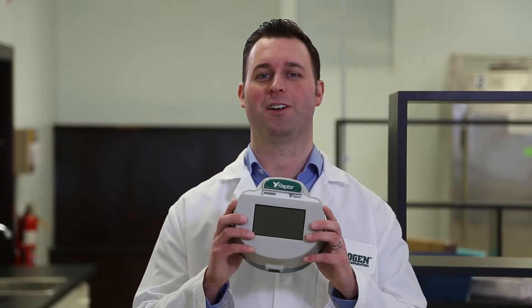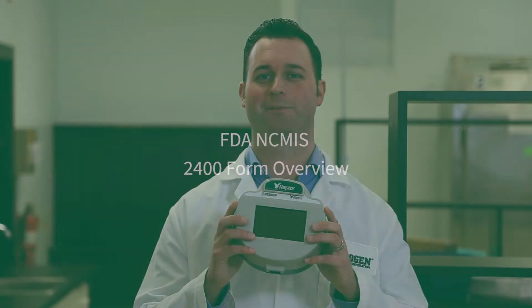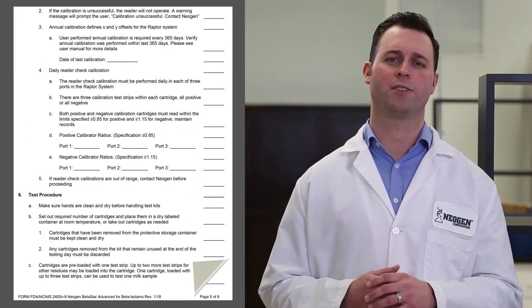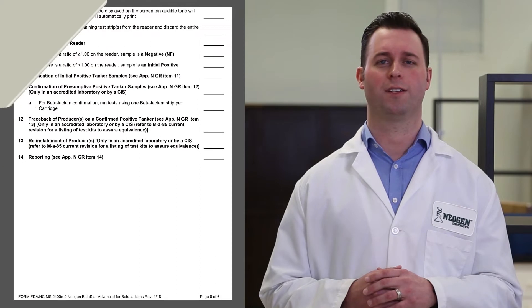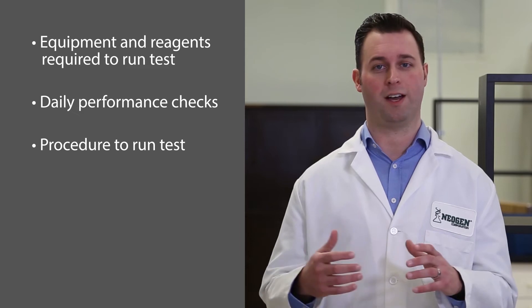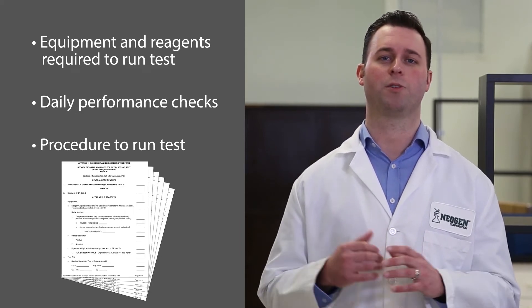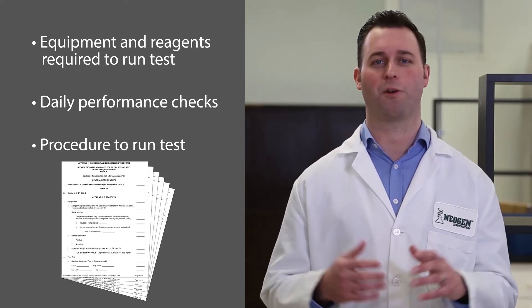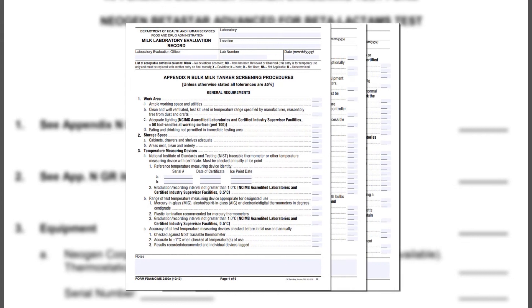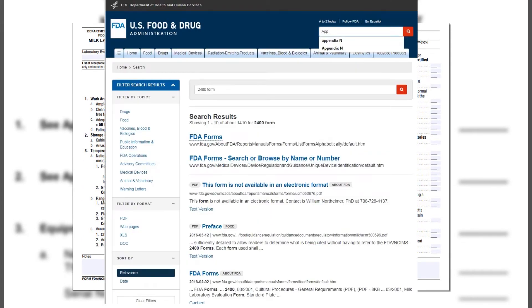This concludes the overview section of the Raptor Integrated Analysis Platform. Most FDA 2400 forms may seem intimidating at first, but once you understand the overarching concepts within the form, it's easy to follow. The form is broken into three sections: the equipment and reagents required to run the test, the daily performance checks, and the procedure to run the tests. There are 14 bolded sections within the Beta Star Advance for Beta Lactams 2400 form. The first section specifies general requirements for antibiotic testing applicable to this 2400 form, referenced in the first two sections. The Appendix N general requirements form can be found on the FDA.gov website.